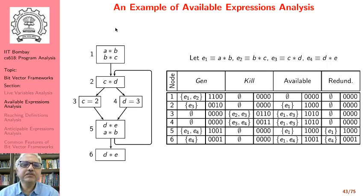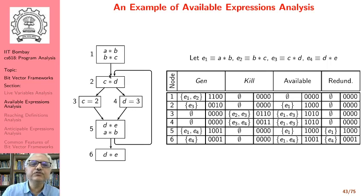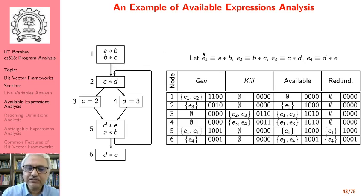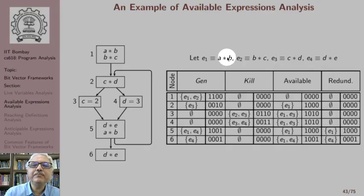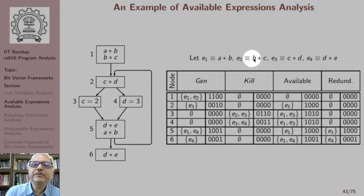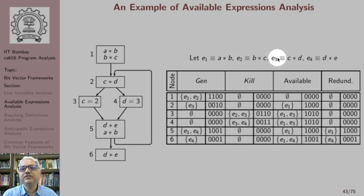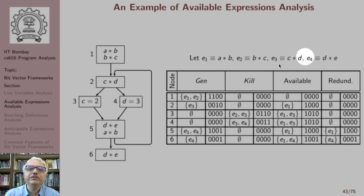We now want to perform available expressions analysis for the program in the given control flow graph. We want to represent sets using bit vectors, and we have assigned bit positions to expressions as follows: expression a*b is e1 at bit position 1, b*c is e2 at bit position 2, c*d is e3 at bit position 3, and d*e is e4 at bit position 4.